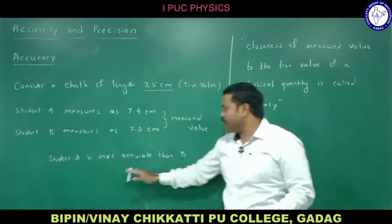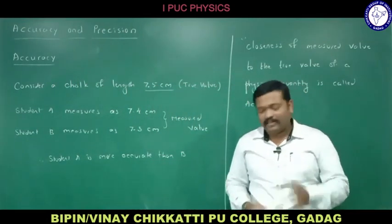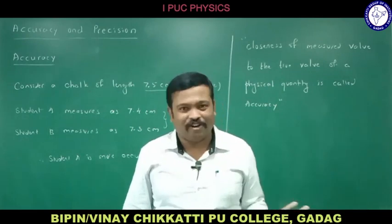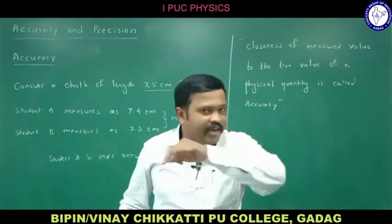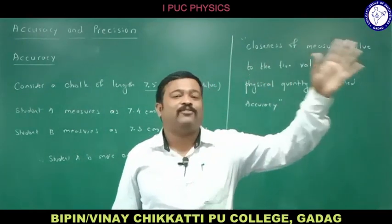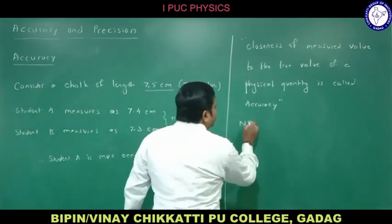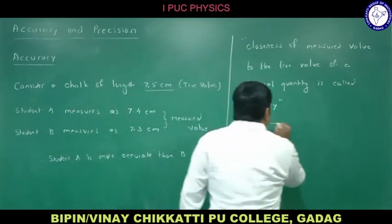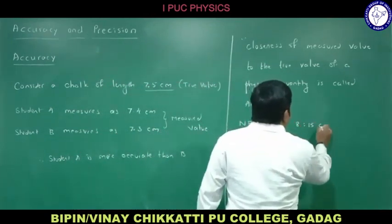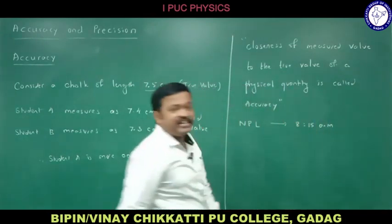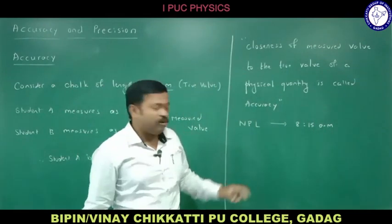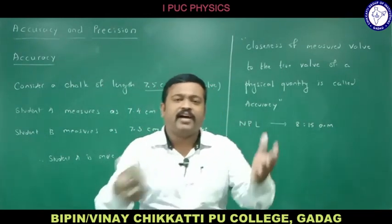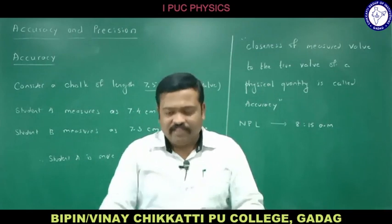Let me take another example. The cesium clock at the National Physical Laboratory gives the perfect time — say it shows 8:15 AM. I ask student A and student B what time it is. Student A says 8:10 AM and student B says 8:12 AM. Since 8:12 is closer to the true value of 8:15, student B is more accurate than student A.